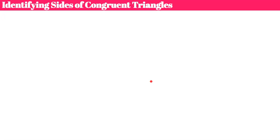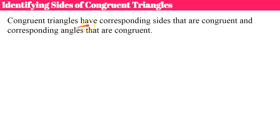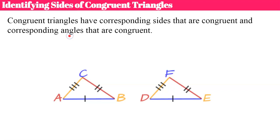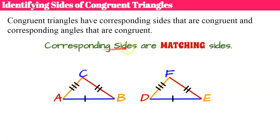Now let's talk about identifying sides of congruent triangles. We're going to focus just on triangles for a minute. Congruent triangles have corresponding sides that are congruent and corresponding angles that are congruent. Here are two triangles: triangle ABC and triangle DEF. We're going to talk about the specific sides of this triangle first. Corresponding sides, to review what this word means, are matching sides.